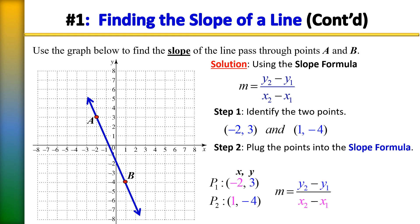Again, that's y₂ minus y₁ over x₂ minus x₁. I've colored them various colors so you can see how they are plugged into the formula. On the top, the signs are the same — keep the sign, add the numbers — that gives us negative 7. On the bottom, we have double negatives: negative 2 with a negative in front becomes plus 2, so 1 plus 2 gives us 3. Our slope then is negative 7 over 3, which is negative 7 thirds.